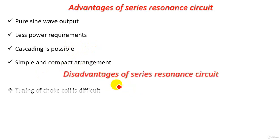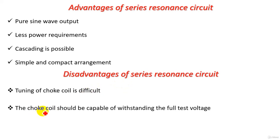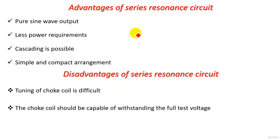Disadvantages of the series resonance circuit: Tuning of the shock coil is difficult — adjusting the coil to make resonance occur is challenging. Also, the shock coil must be capable of withstanding the full test voltage, requiring special specifications. This completes our understanding of the resonant transformer for producing high-voltage AC at power frequency.